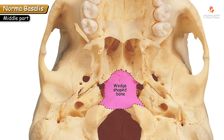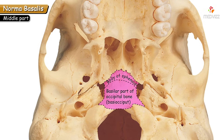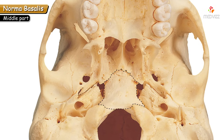This wedge-shaped bony bar is formed by two structures: the inferior surface of the body of the sphenoid and the basilar part of the occipital bone (the basi-occiput). The body of the sphenoid and basi-occiput fuse completely to form this wedge-shaped bone, extending to the anterior margins of the foramen magnum. On the inferior side, the surface is irregular due to pits meant for the pharyngeal tonsil, which forms the roof of the pharynx.